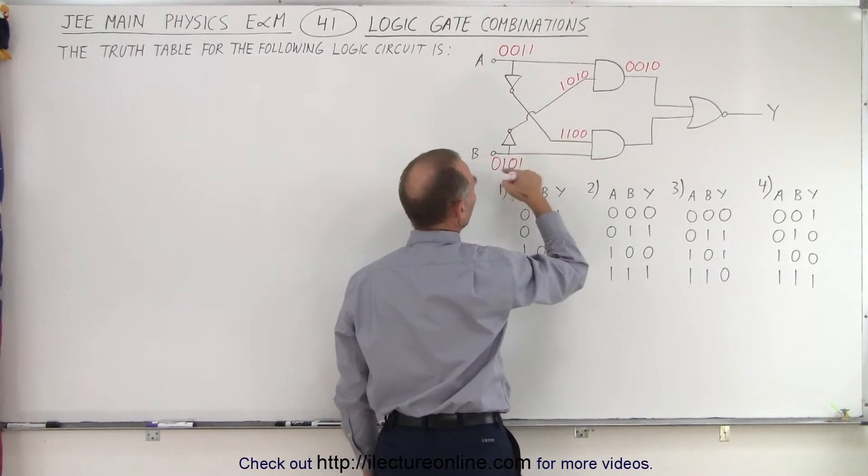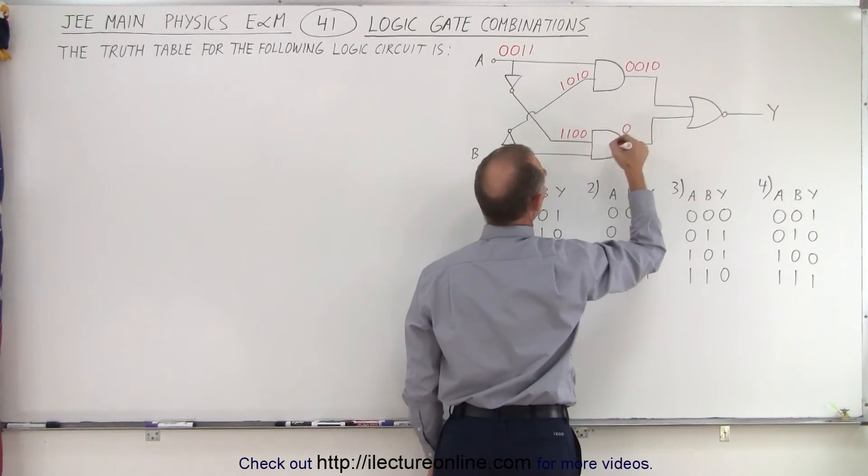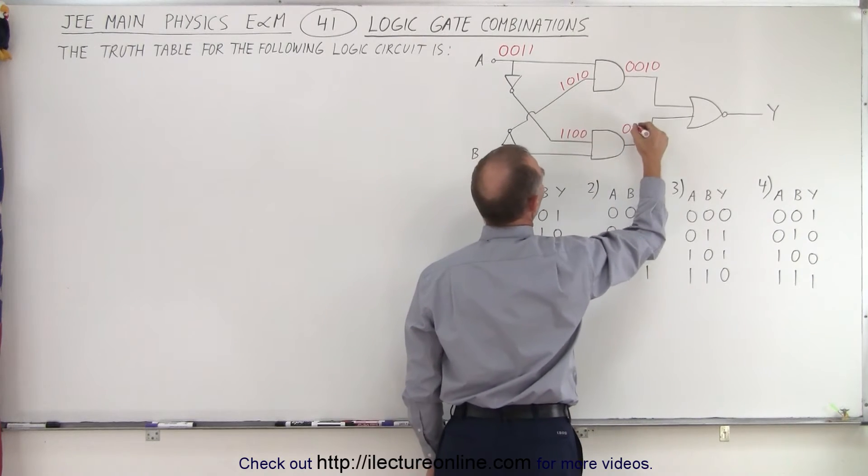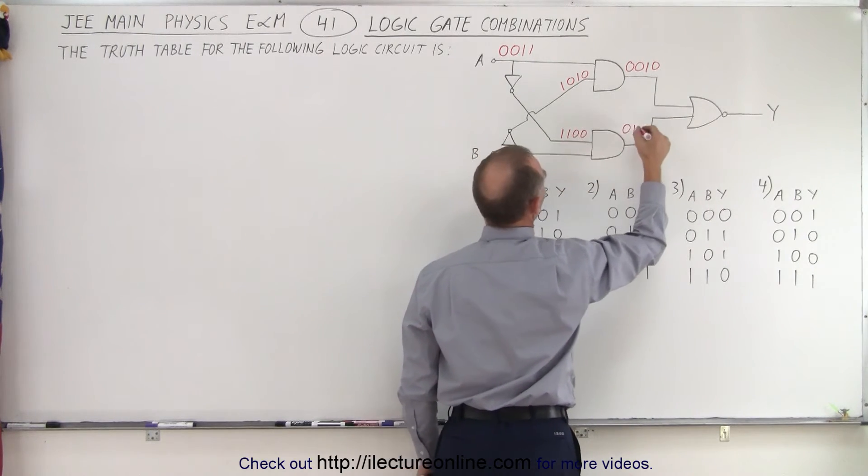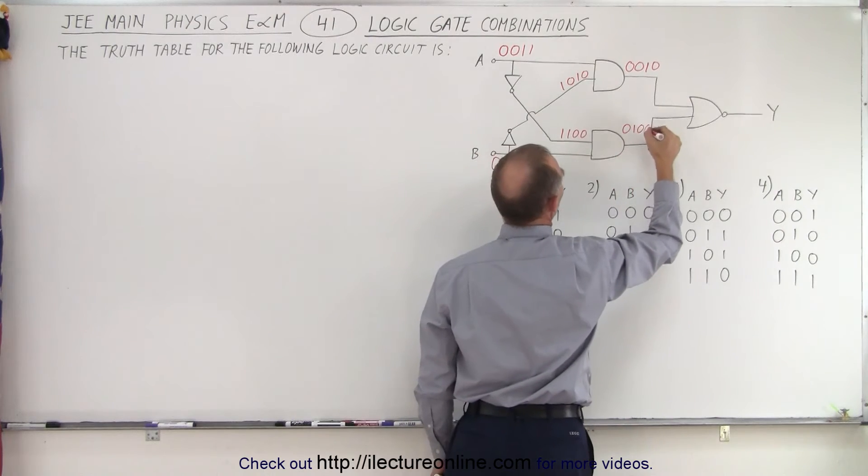In the bottom AND gate we have a 1 and a 0 gives us a 0, a 1 and a 1 gives us a 1, a 0 and a 0 gives us a 0, and a 0 and a 1 gives us a 0.